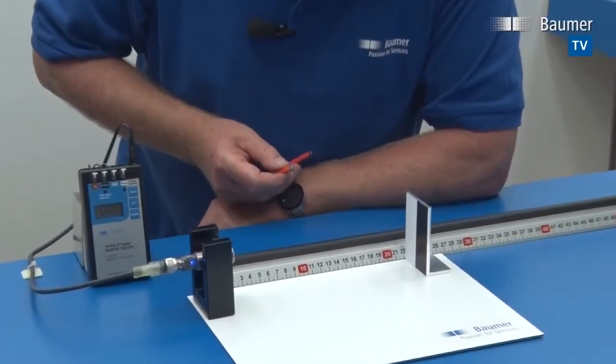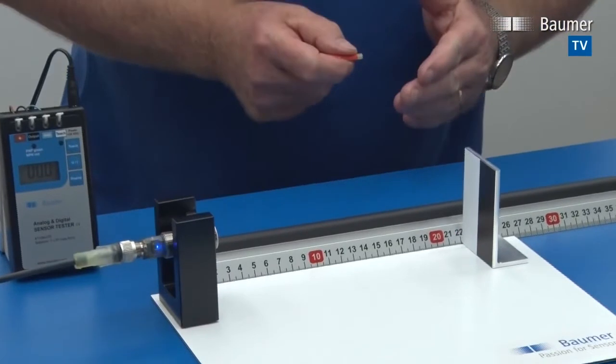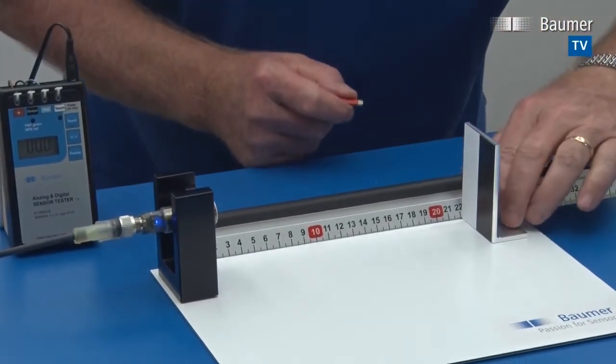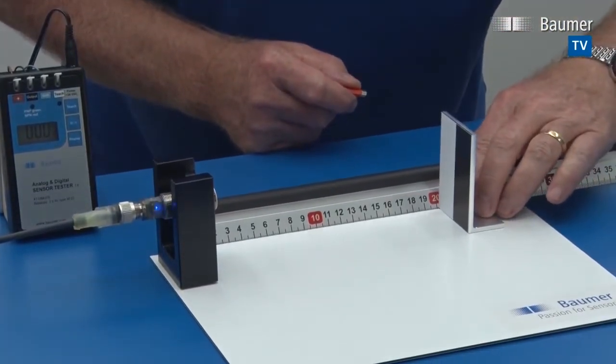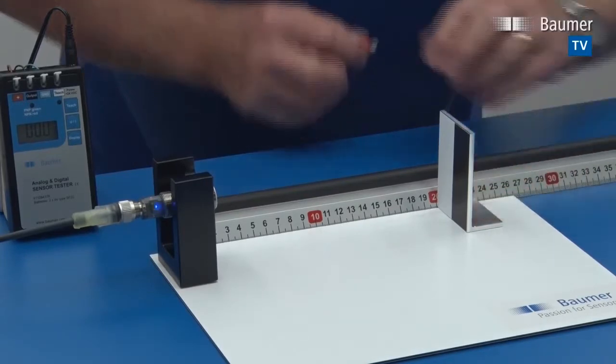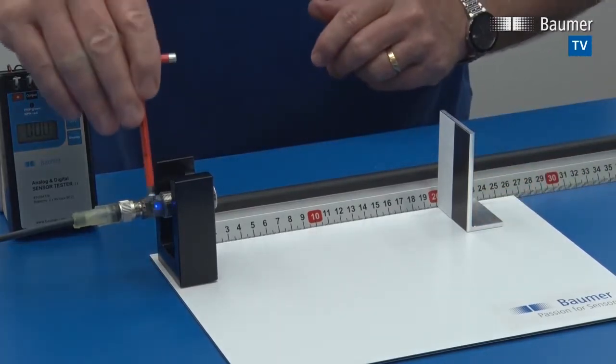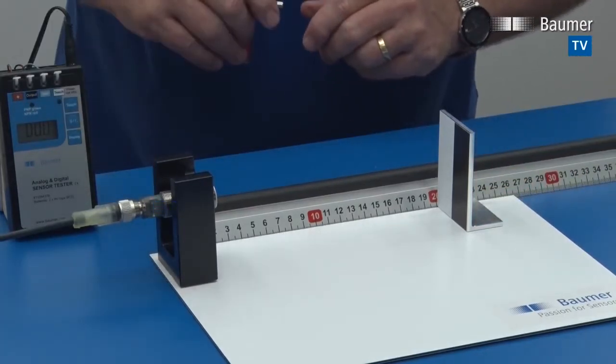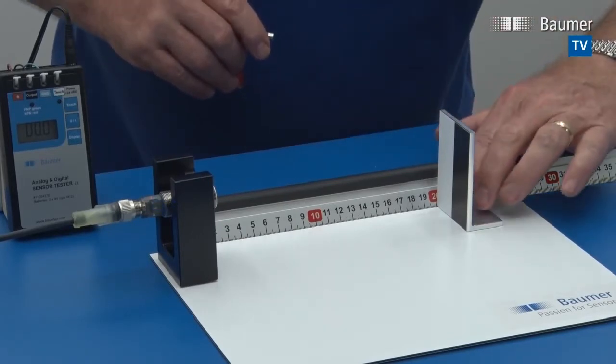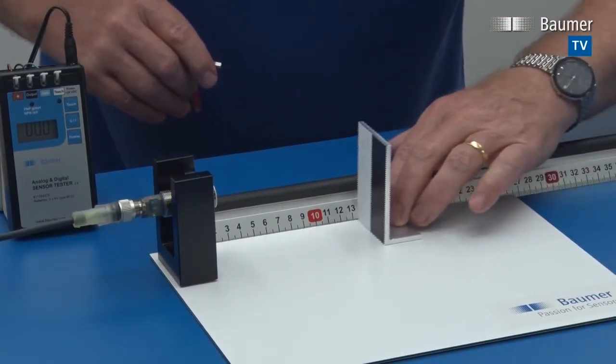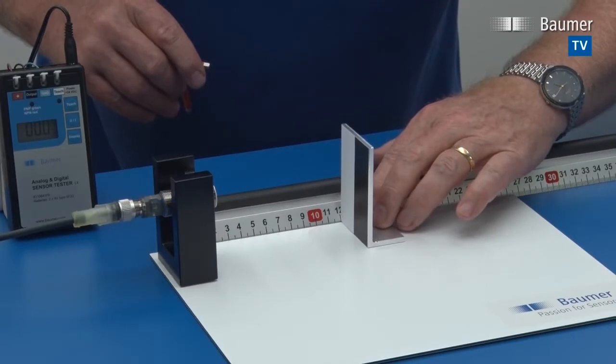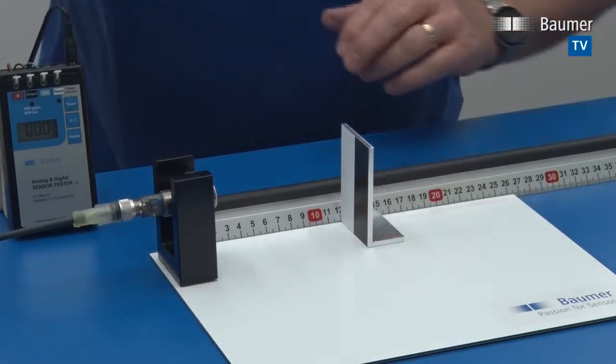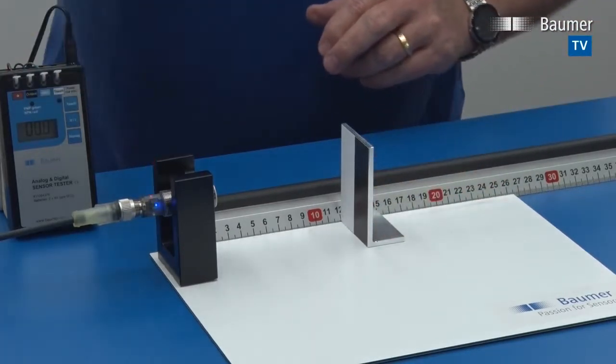The sensor starts to flash. But what we do differently now is we teach the far end, 20 centimeters first. Confirm. Move the target to 12 centimeters, so the same range as before. Confirm.